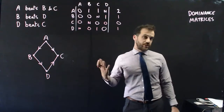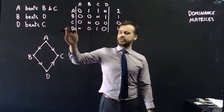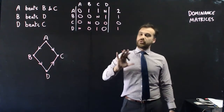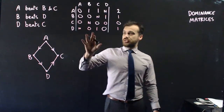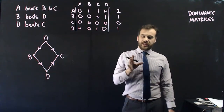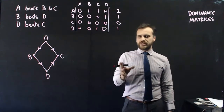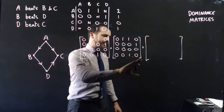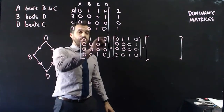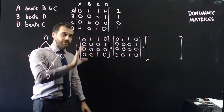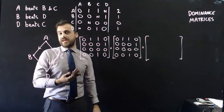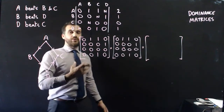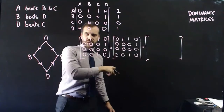The big question dominance matrices are good at answering is: who's better, B or D? This scales up really nicely. The way we get around this is to take the matrix and multiply it by itself — the matrix squared. This gives us second-hand wins. You beat a team, that team beat someone else, so there's a good probability you could also beat that third team.